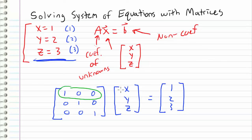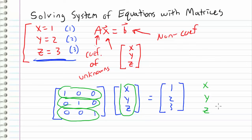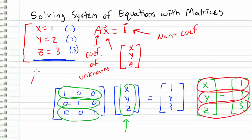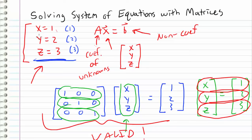If I take the first row and multiply it by our vector, I get x. If I take the second row and multiply it by our vector, I get y. And if I take the third row, I get z. So the resulting vector from this matrix multiplication is x, y, z, which equals the vector one, two, and three. We can see we have three equations: x equals one, y equals two, and z equals three — exactly what we started with. So this is a valid representation of this system of equations.